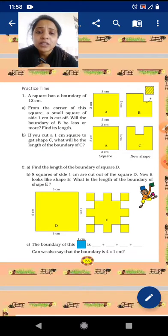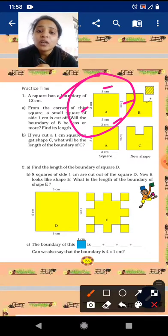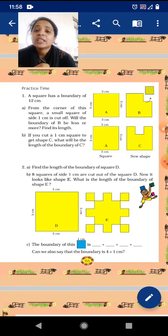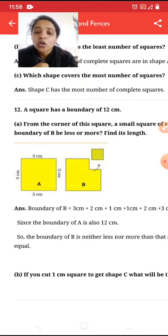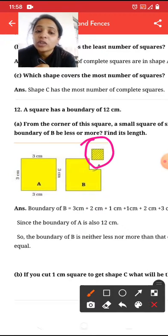A square has a boundary of 12 centimeter. See, this is the square. It's having the boundary of 12 centimeter. 3 plus 3 plus 3 plus 3. From the corner of this square, a small square of side one centimeter is cut off. Will the boundary of B be less or more? Find its length. See, what they are telling? Here, the square, complete square is given. From that complete square, we had cut a corner of it of one centimeter. Here it is. So, now we have to check whether the boundary is equal to square A or it will be more or it will be less. That we have to check.